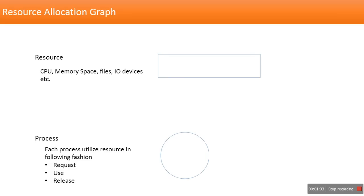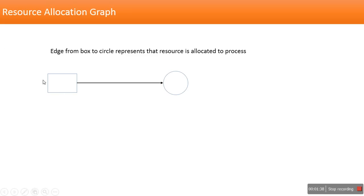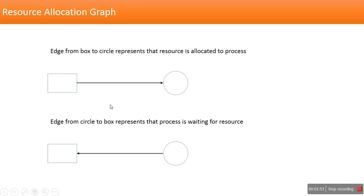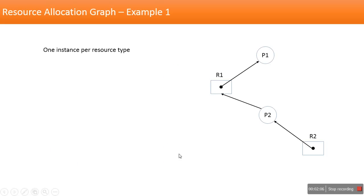Once the process execution is done, the process will release the resource. If the resource is not available, the process will keep on waiting. In a resource allocation graph, an edge from a box to a circle means the resource is allocated to that process, and an edge from a circle to a box means the process is waiting for that resource.